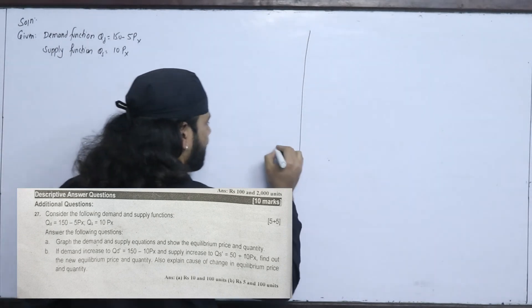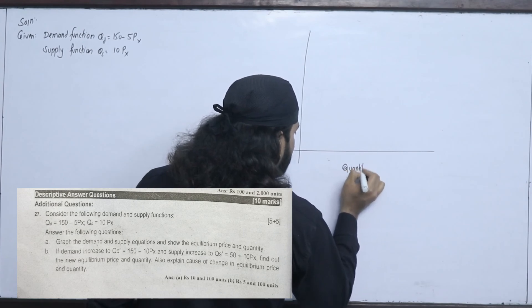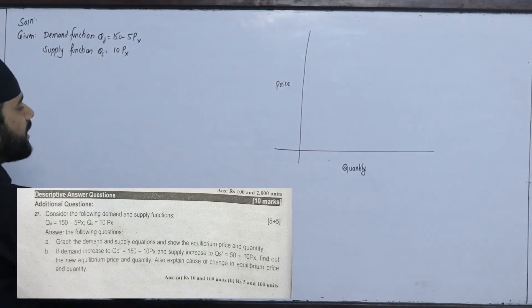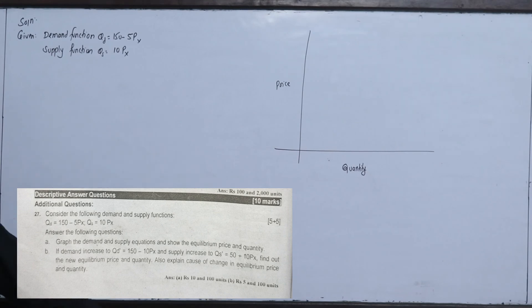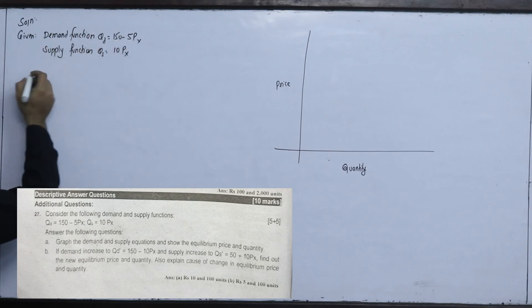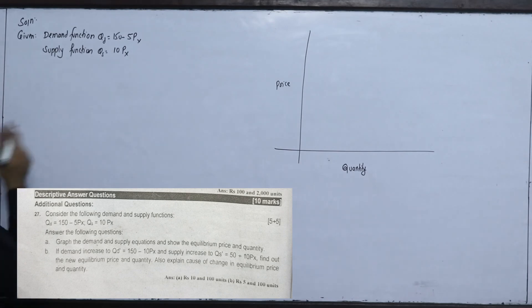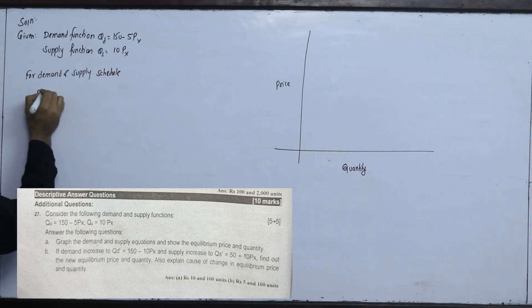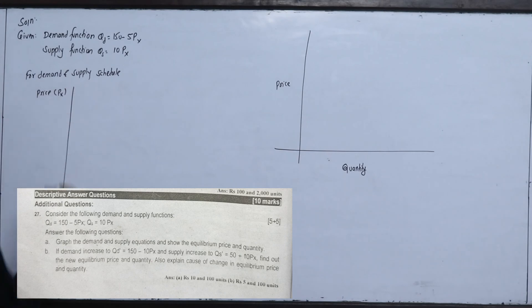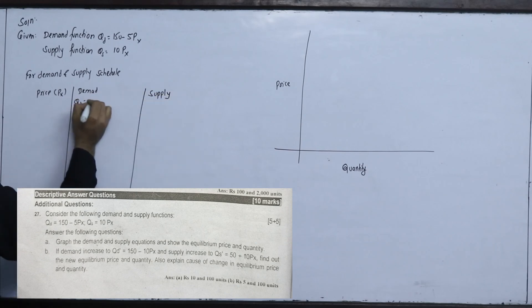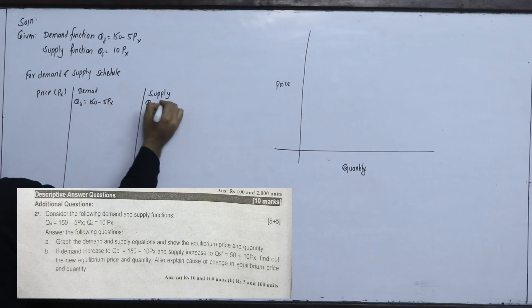To graph the equations, we set up a demand and supply schedule. There is price on one axis and quantity on the other. The demand function is QD = 150 - 5PX and supply is QS = 10PX. We set price levels at 0, 5, 10, 15, and 20 to compute corresponding demand and supply quantities.